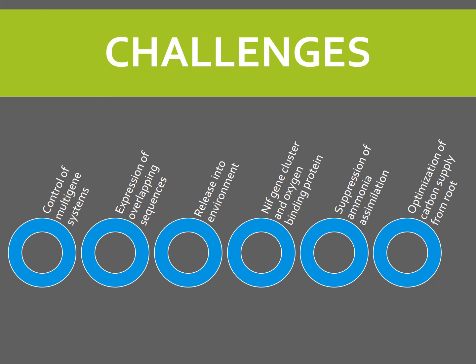Now, coming to the challenges involved. Control of multi-gene systems in plants is very difficult, and what we do in the lab may not happen in the field. There will be several overlapping sequences whose expression has to be controlled. Also, release of any engineered organism into the environment is a major risk, because we don't know how that organism will behave in the environment — whether it will revert back or cause any other damage. This prevents us from using this technology on a far and wide basis.